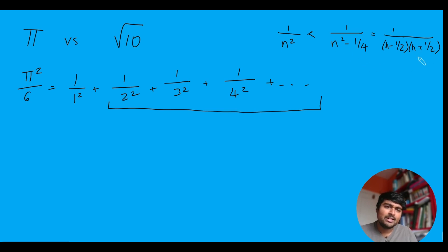Okay, cool. Well, now we're going to use just some partial fractions. So I'll leave for you to check this yourself. But this just equals 1 over n minus a half minus 1 over n plus a half, like so.